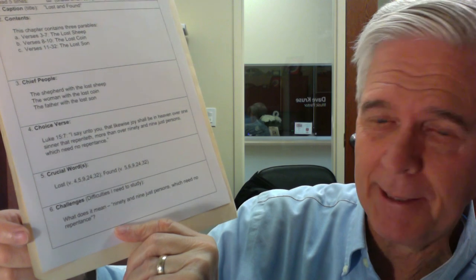The challenge is, was that part in verse 7 of chapter 15 where it says, 99 just persons which need no repentance. And I ask, well, what does that mean? And maybe for further study I can look that up.